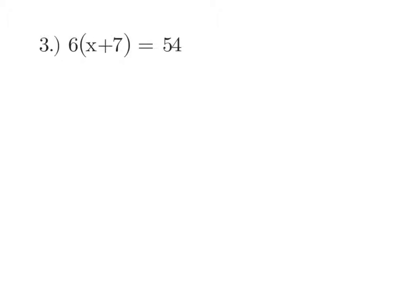Now, what if the distributive property is inside our equation? In this problem we still have 6 times (x + 7), just like we did above, but now this is equal to 54. Our plan is to simplify the expression first — distribute that 6 inside just like we did above. So 6 times x is 6x and 6 times 7 is 42.